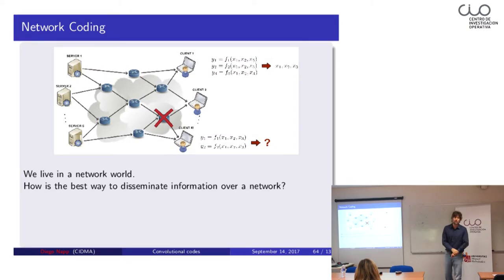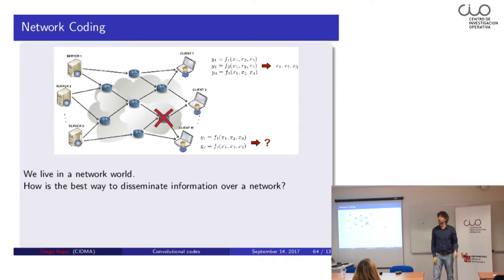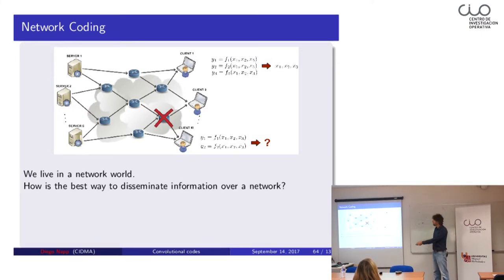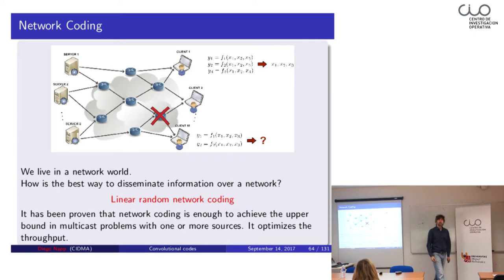In 2008 something revolutionary happened in the field. They said: now we live in a world of networks. I don't send a message directly to you point-to-point — I send it to WiFi, which is a huge network, or to the internet, where routers combine packages before you receive the message. This is not point-to-point. There is a network. So the theory has to change to accommodate sending information over networks, leading to the idea of linear random network coding.